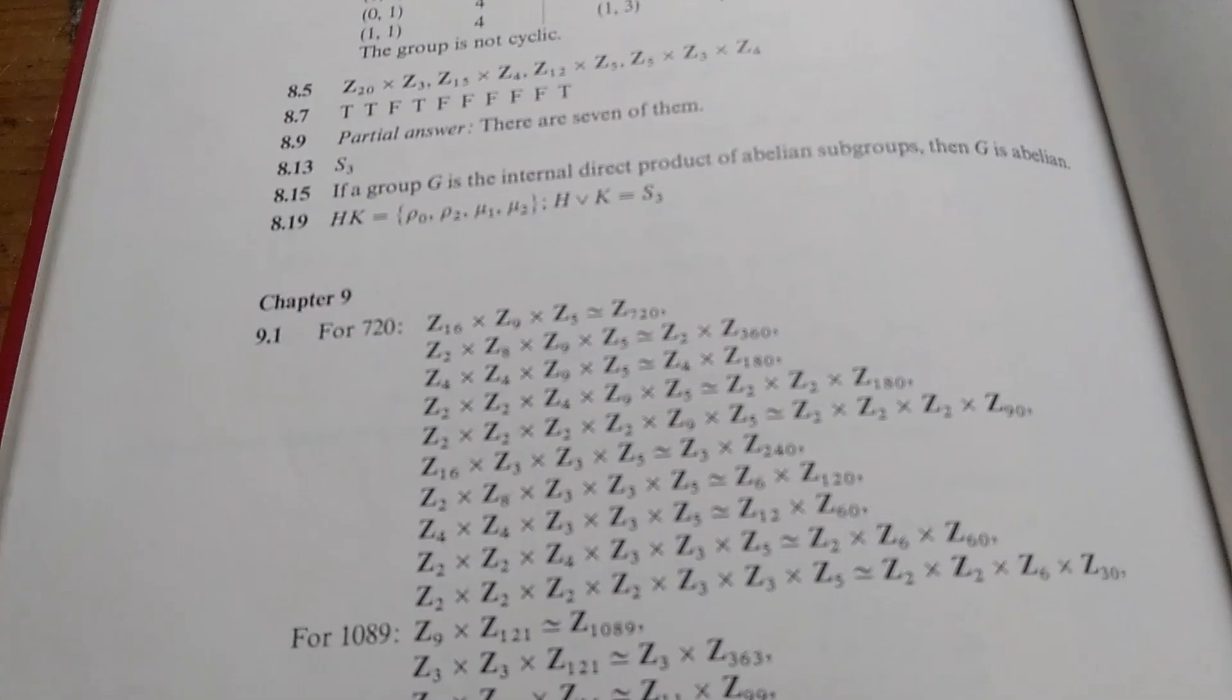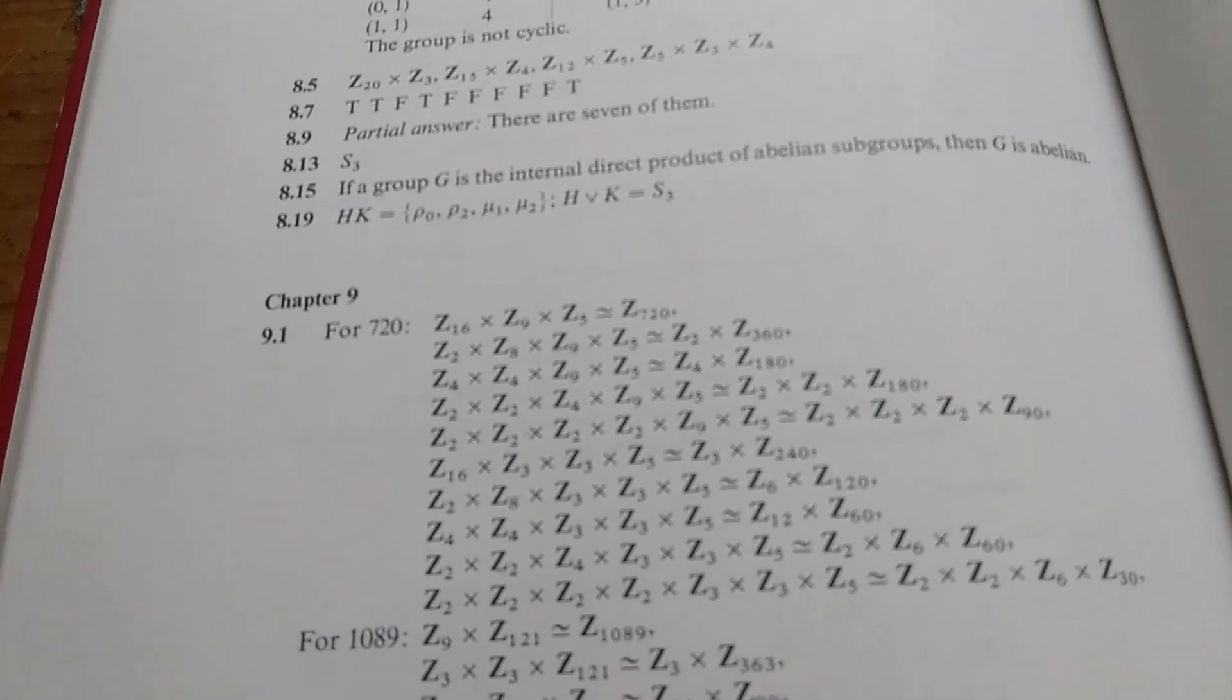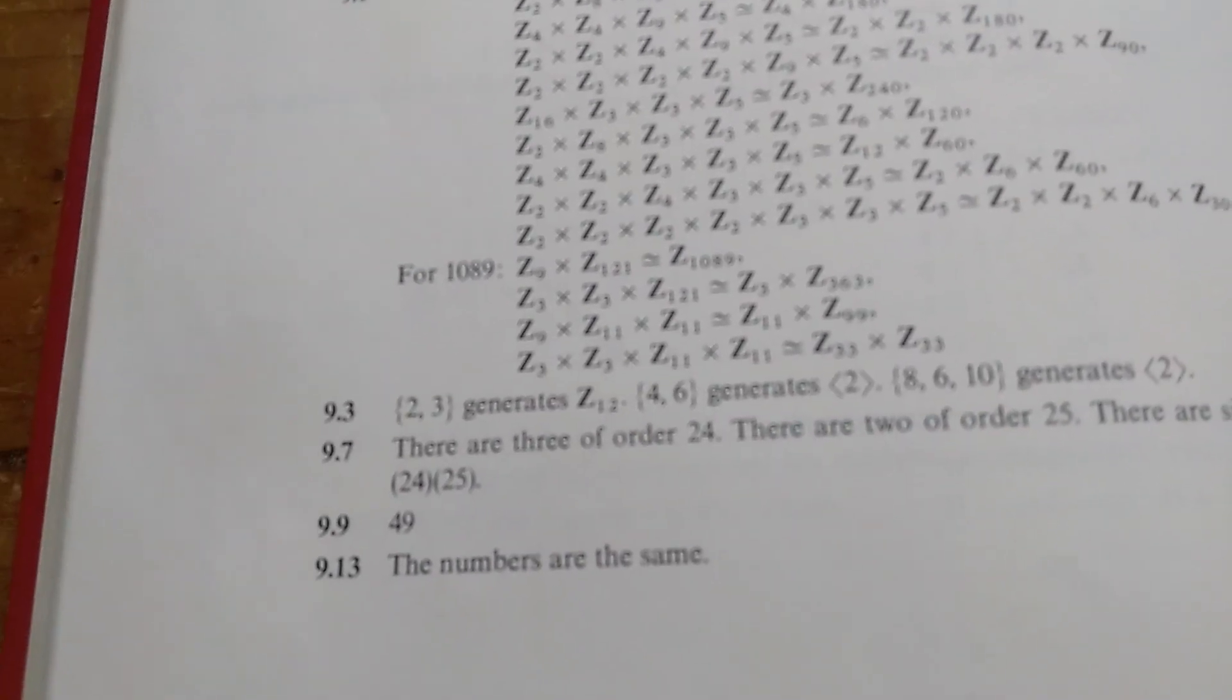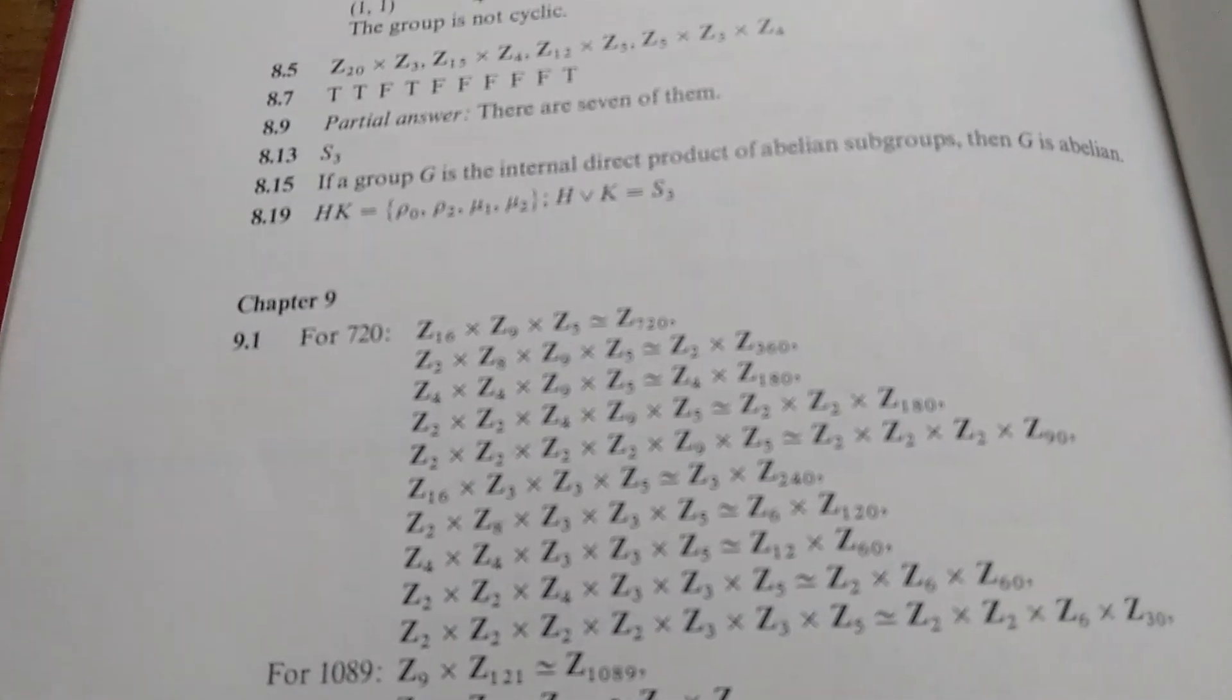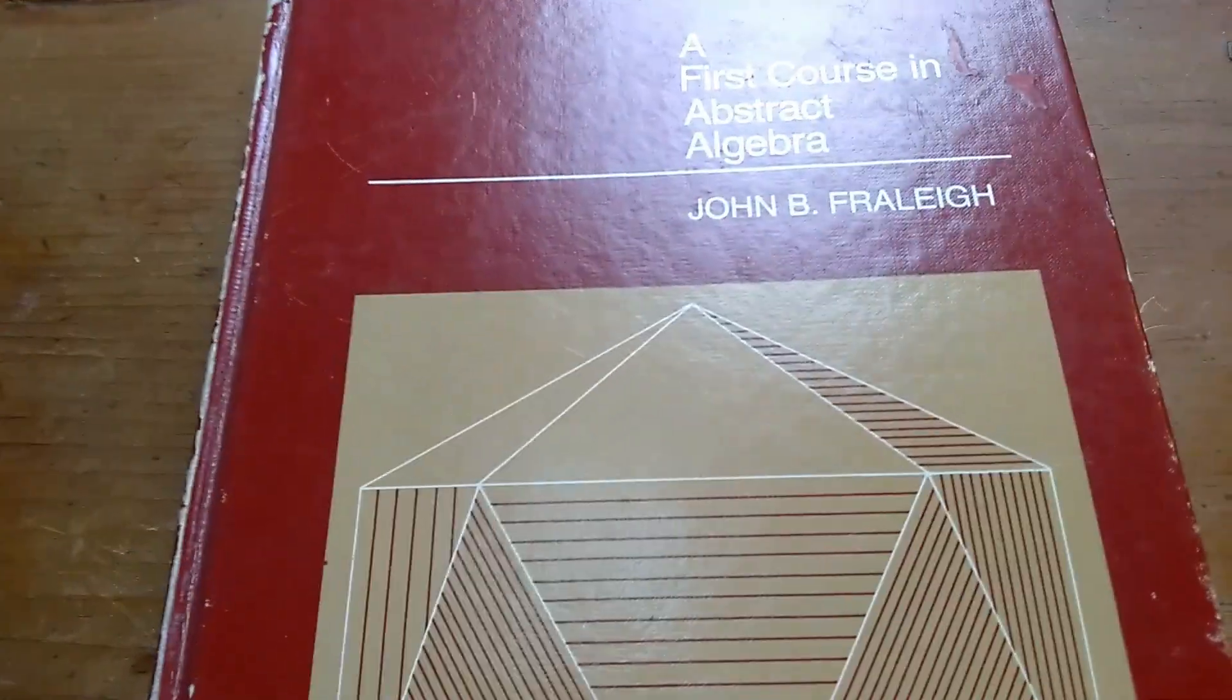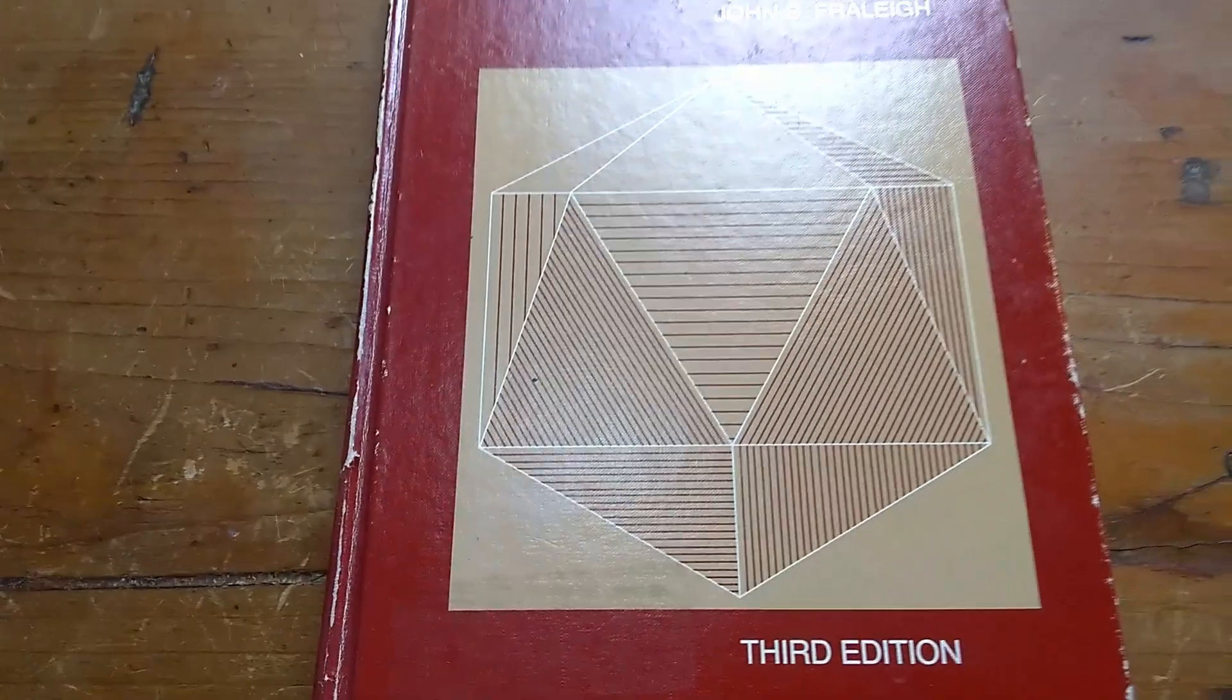Fraleigh does include answers to some of the exercises, not all. And there are really no answers to the proofs. Sometimes he does give hints, so I guess that is better than nothing. So there are some solutions to some of the exercises. Again, the book is A First Course in Abstract Algebra, written by John B. Fraleigh. It's a really good book. That's it. It's a really good book.